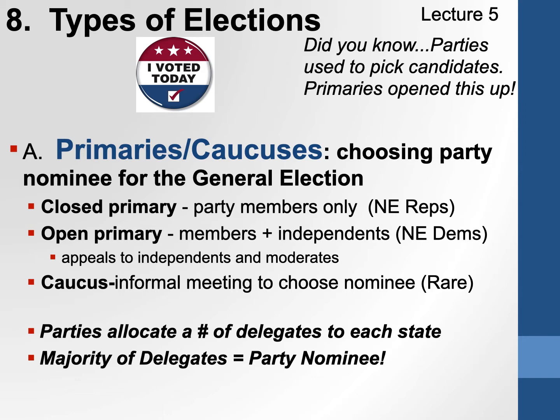A state can choose to be open. Nebraska has chosen to be open on the Democratic side — the Nebraska Democratic Party has chosen an open primary, so ballot voting is still used, but they open it up to independents as well. Nebraska Democrats are outnumbered by Republicans across the state, so opening up to independents helps get them involved in their process.